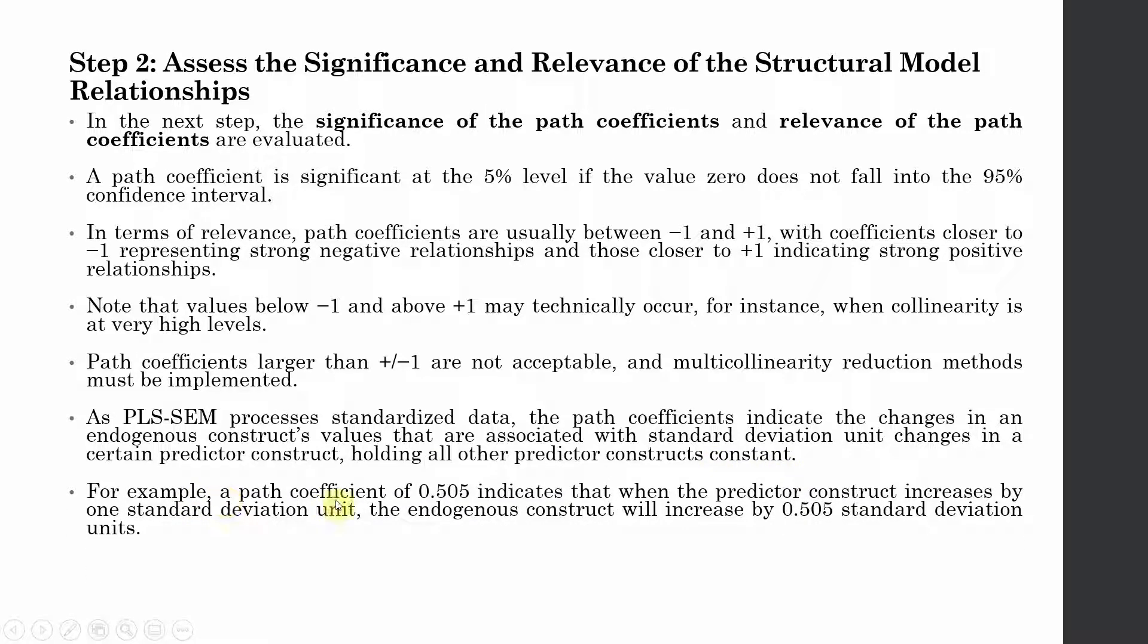For example, a path coefficient of 0.505 indicates that when a predictor construct increases by one standard deviation unit, the change in the endogenous construct is 0.505 standard deviation units.